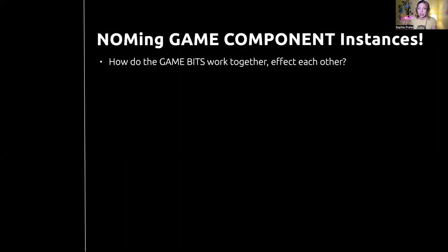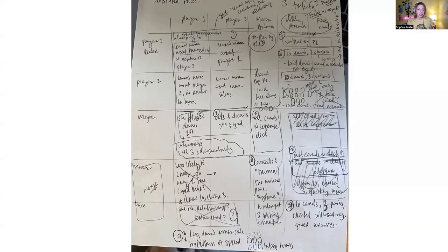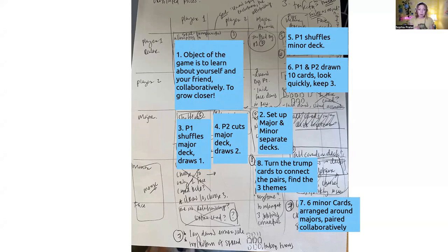Game component instances — I love game design. How do the game bits work together? We can brainstorm new games with existing pieces and map out instructions. That's what happened when I did a Nested Object Matrix for a game I designed two weekends ago with tarot cards. I wanted to design a collaborative fortune-telling game to bring people closer together. Laying out player one, player two, the major arcana, and the minor arcana helped me map out how I'd describe and teach the game — and helped me map the order of operations for instructions.